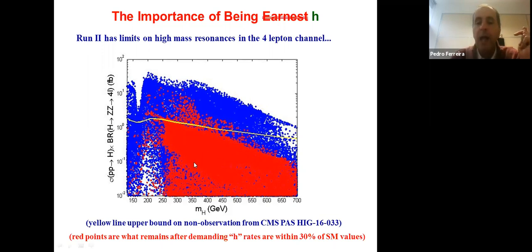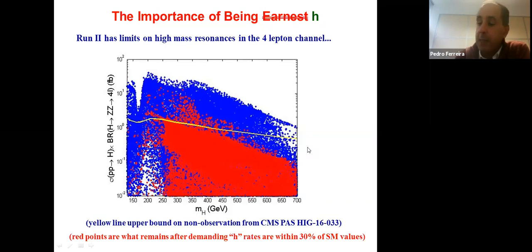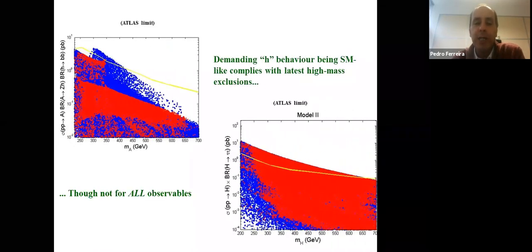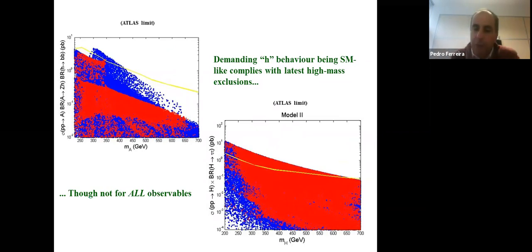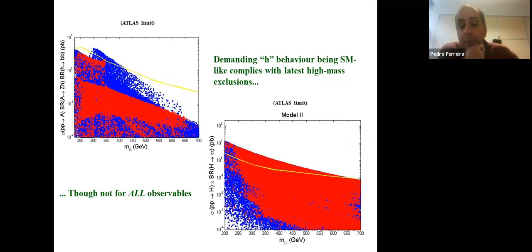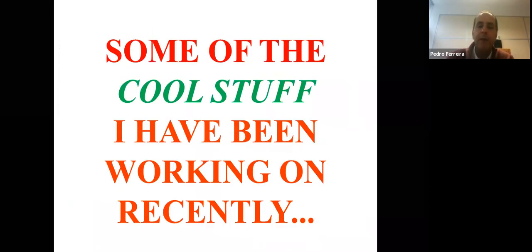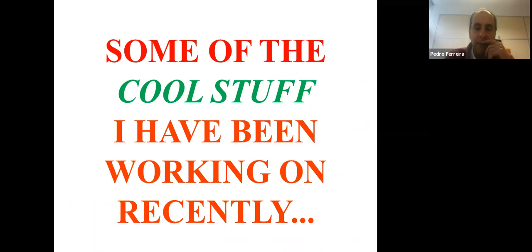Of course, we still have quite a lot of allowed points nowhere near current experimental sensitivity, but the current Higgs data is already seriously limiting the parameter space. You can also use current searches for both the heavier scalar H and the pseudoscalar A decaying to τ⁺τ⁻, for instance, to eliminate portions of your parameter space. The searches are already excluding parts of the parameter space as well.